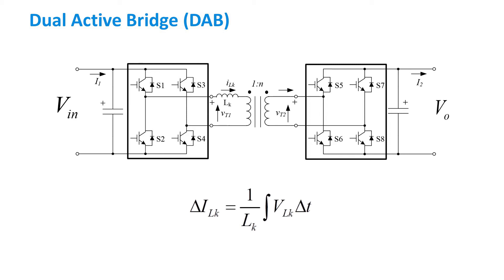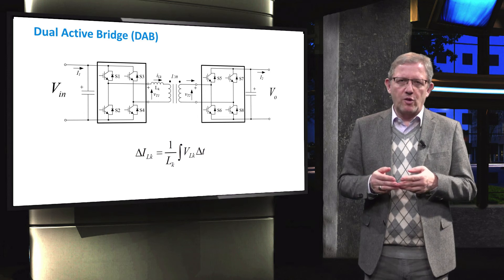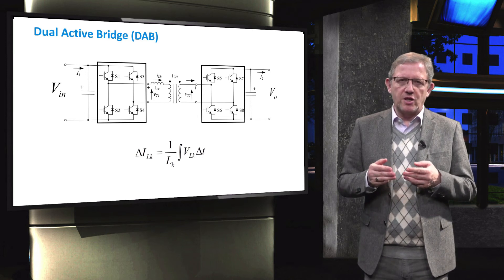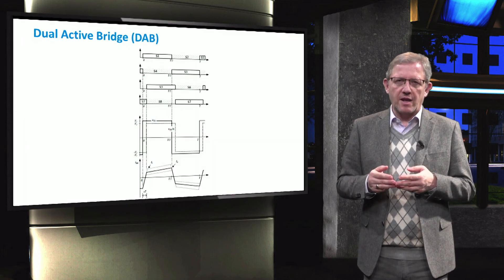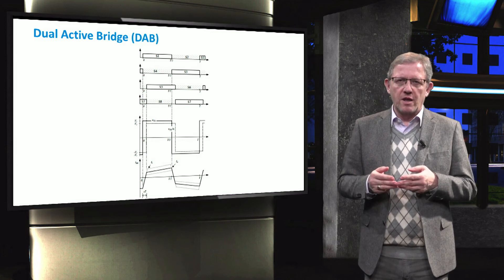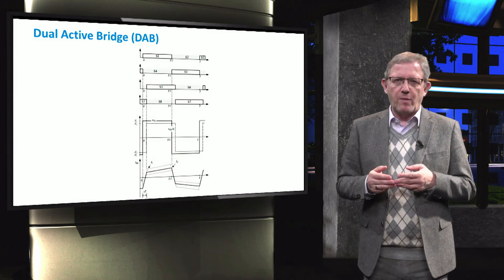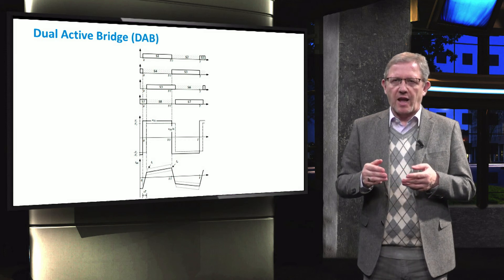The primary inverter and secondary converter may include four switches. The power flow is controlled by modulating the voltage at the leakage inductance of the transformer. Due to the presence of the leakage inductance, Lk, the block forms of the transformer voltages show a phase shift given by the X-factor which gives the phase difference time X times T.